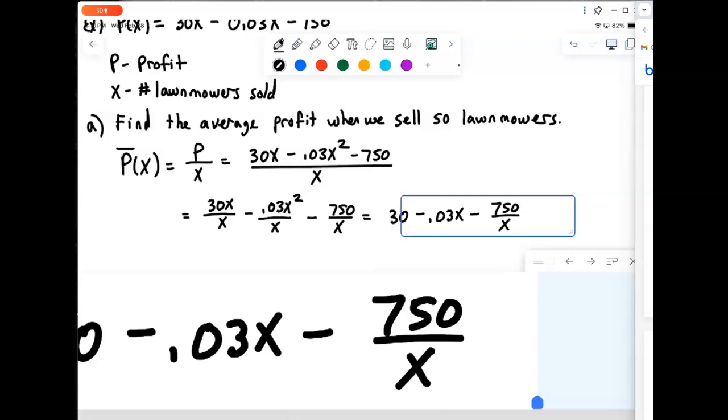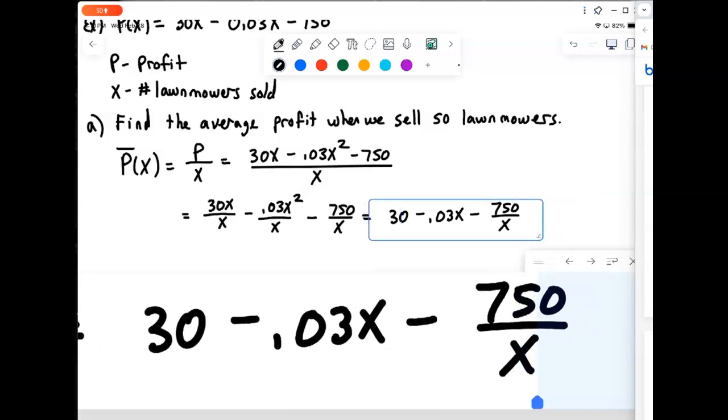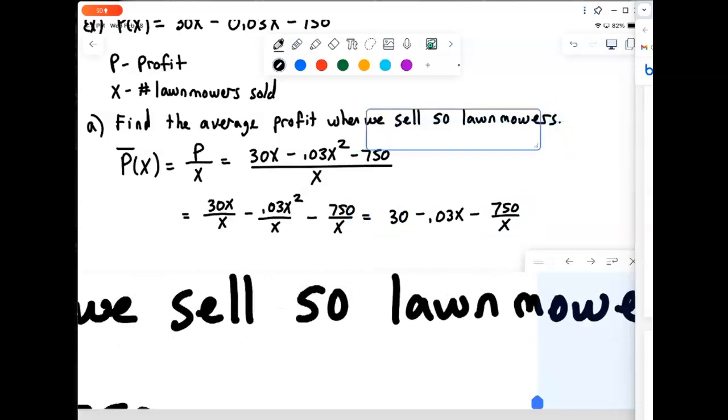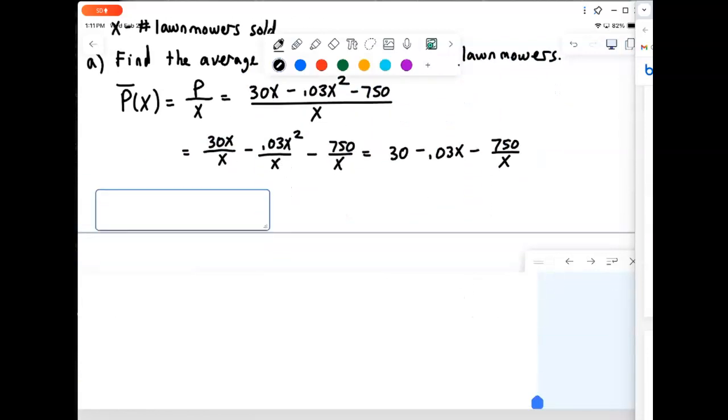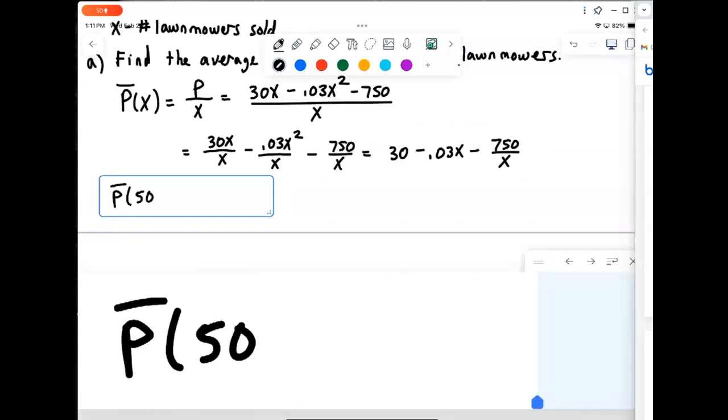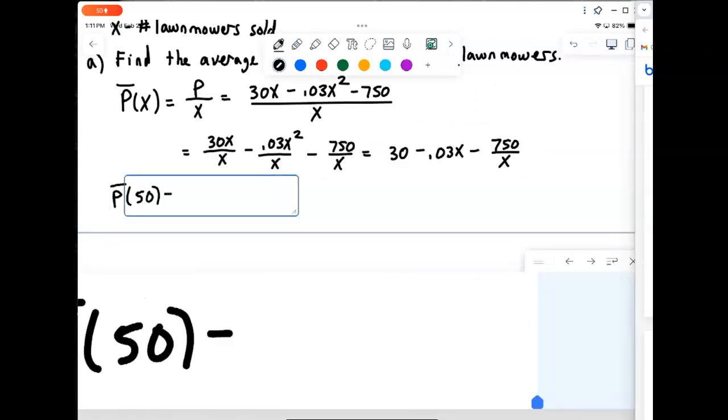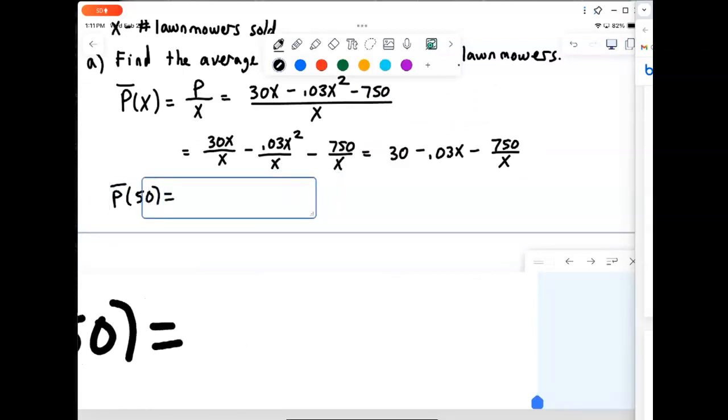We'll get 30 minus 0.03x minus 750 over x. And so that is actually going to be our average profit function. And then we're asked to compute that for 50 lawnmowers, find the average profit when we sell 50 lawnmowers. So P bar of 50, we'll just go in and plug 50 in for x.